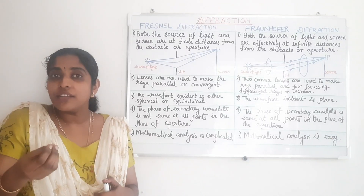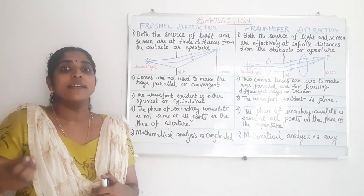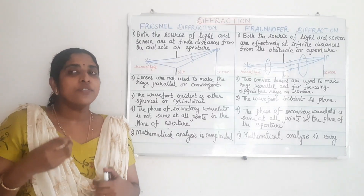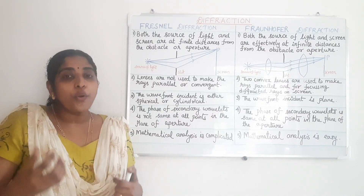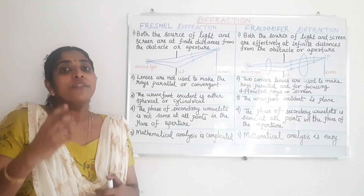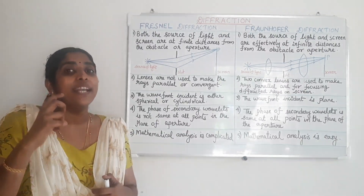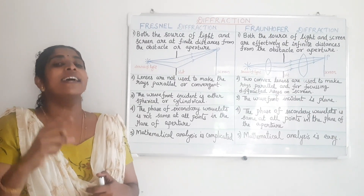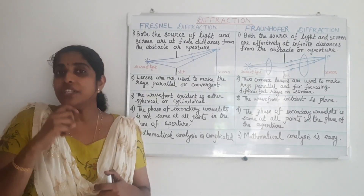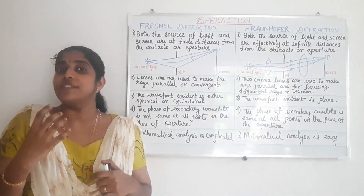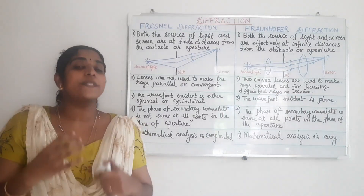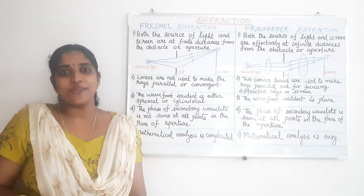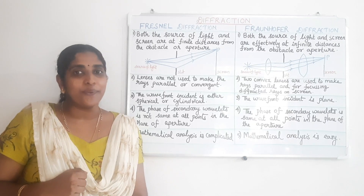But the wavelength of sound is more, so sound waves can bend easily. In order to produce the diffraction of light, we have to reduce the size of the obstacle. That is why the diffraction of light is not easily observable in our daily life, but diffraction of sound waves occurs easily.